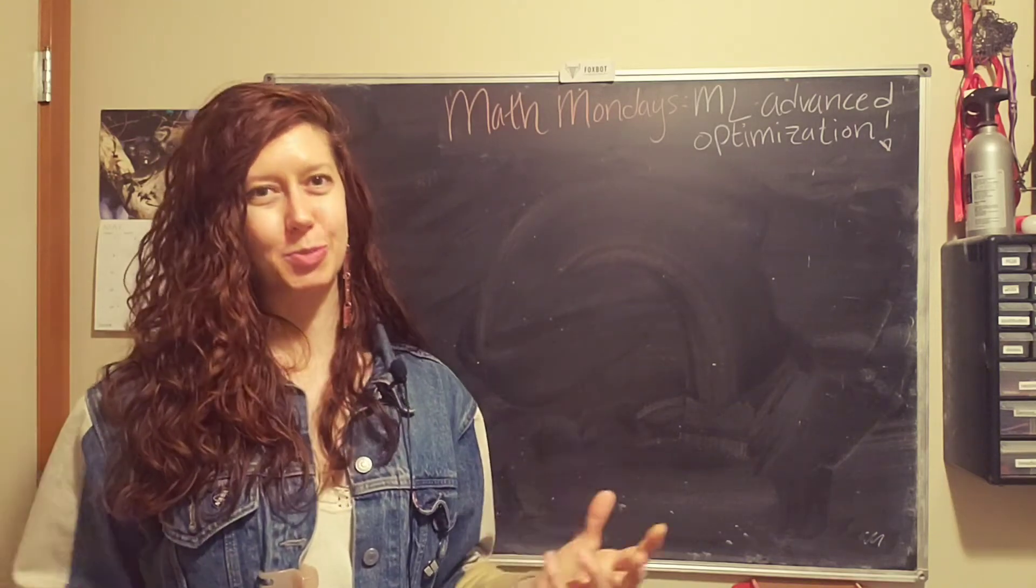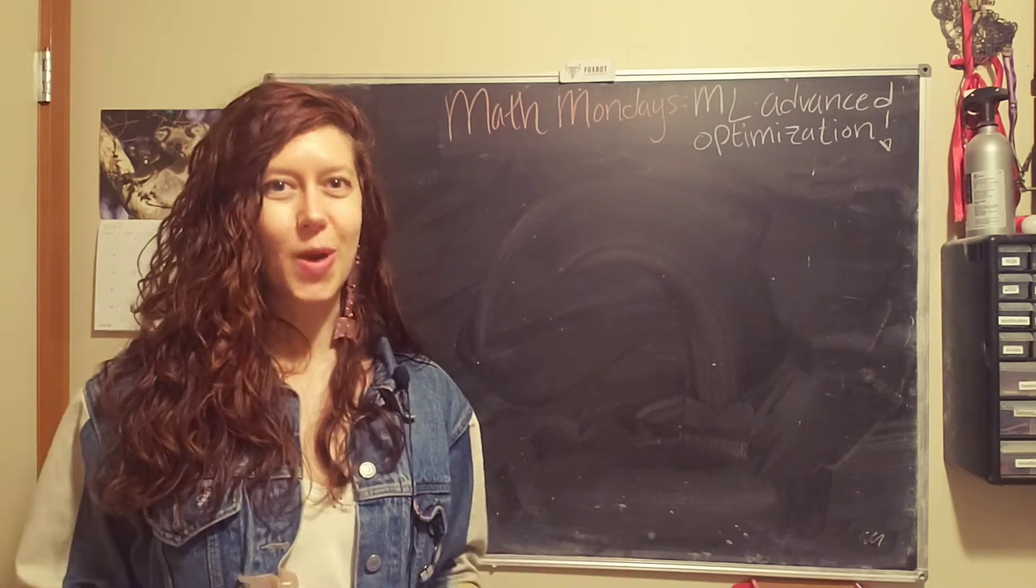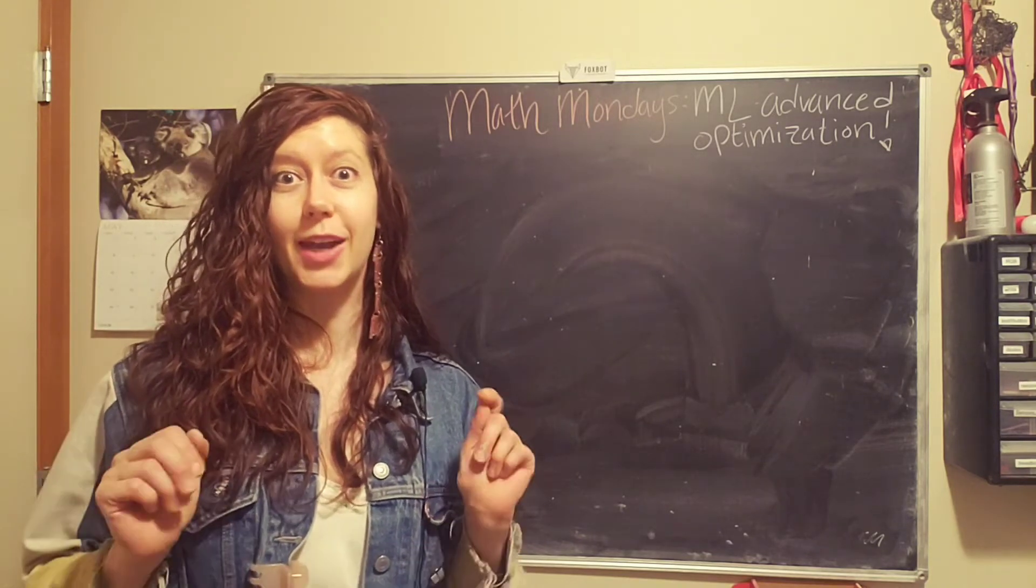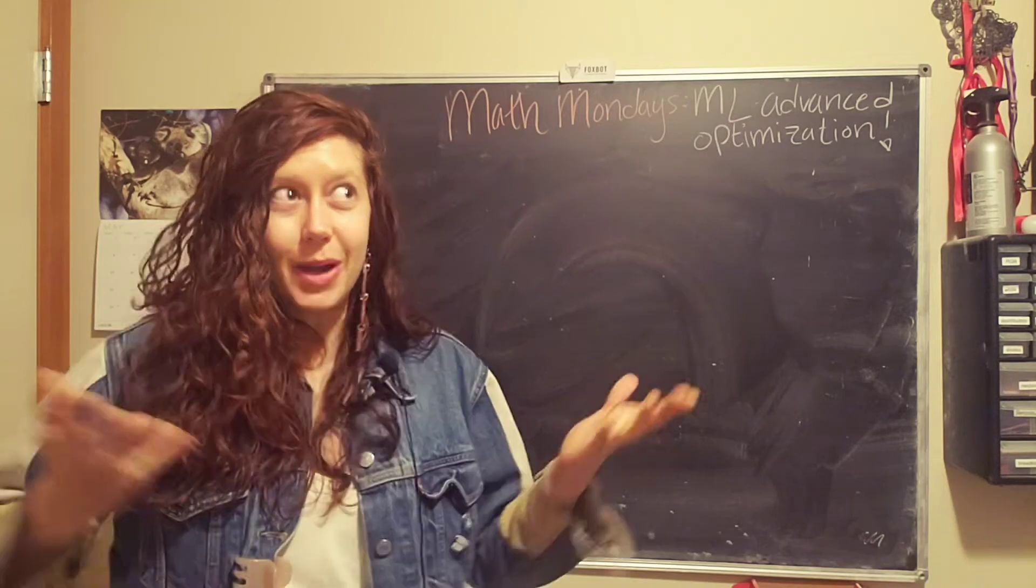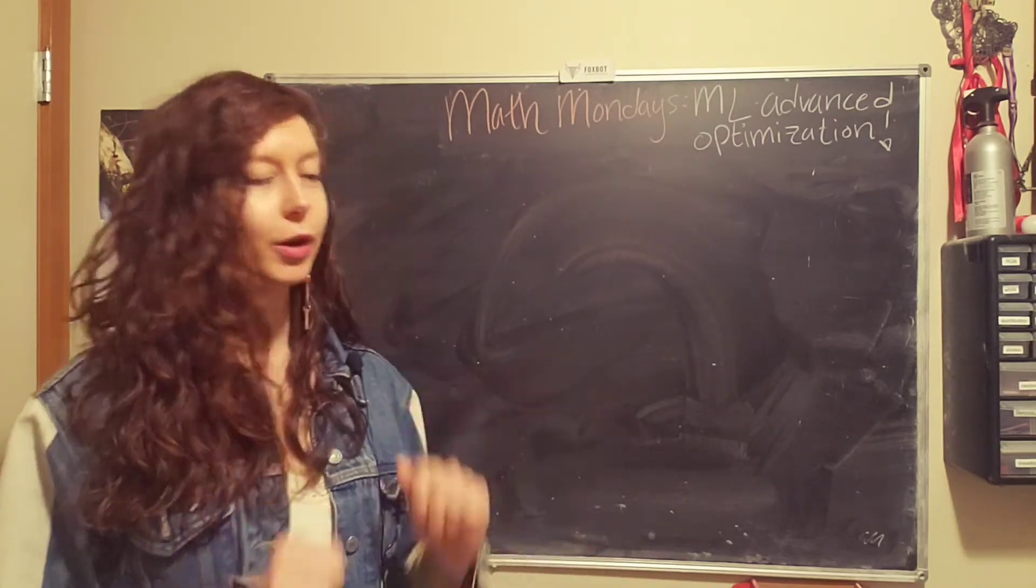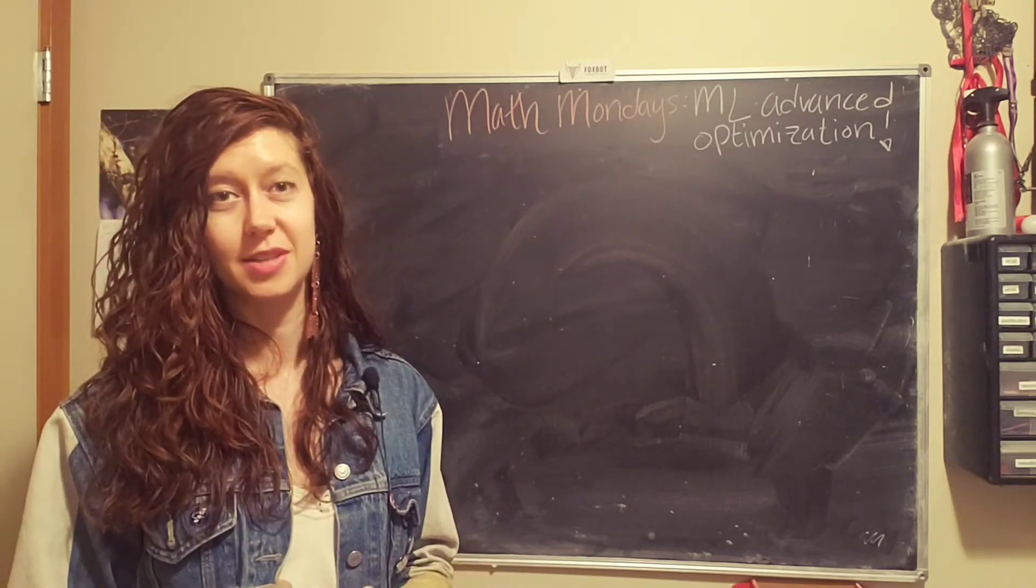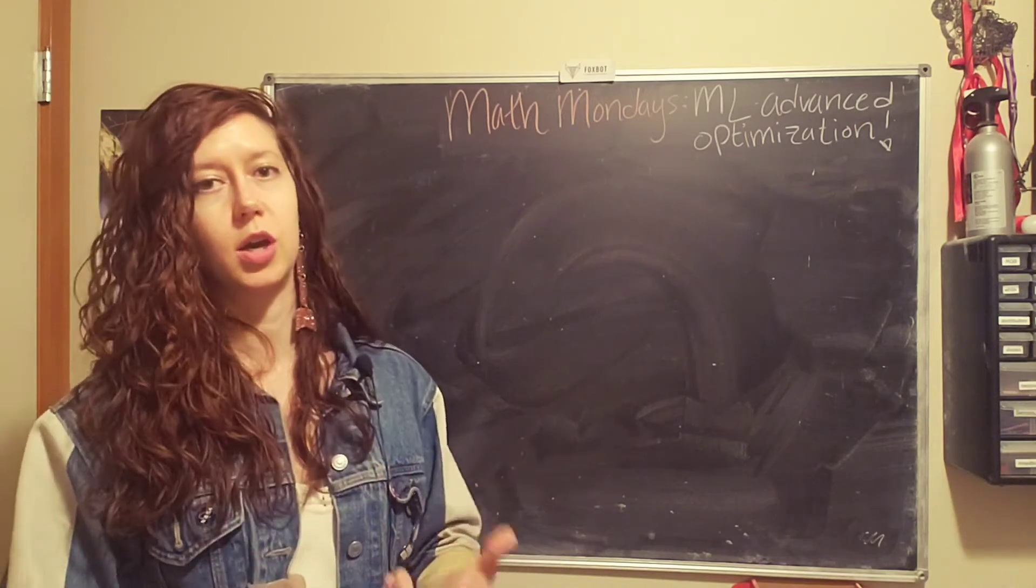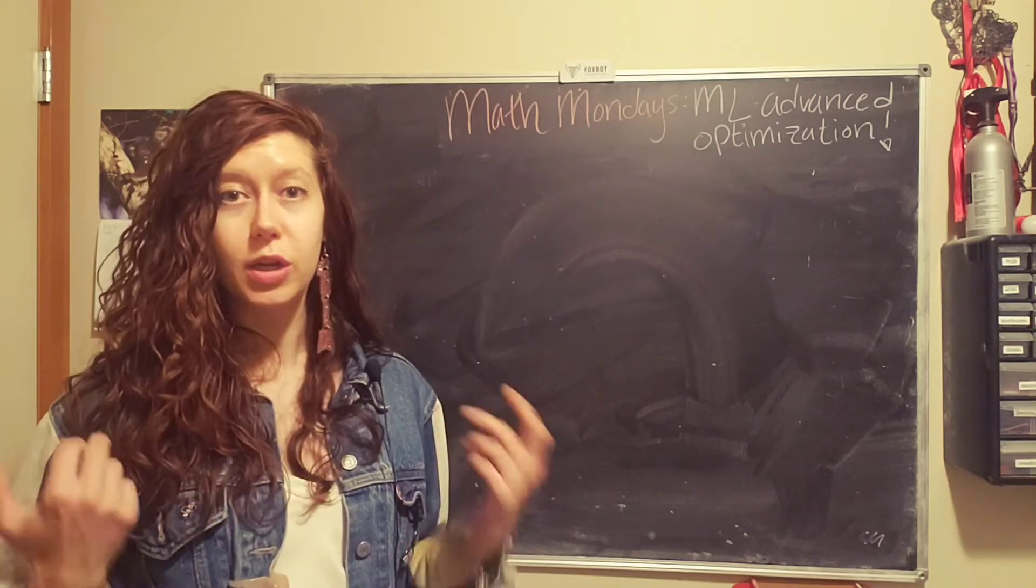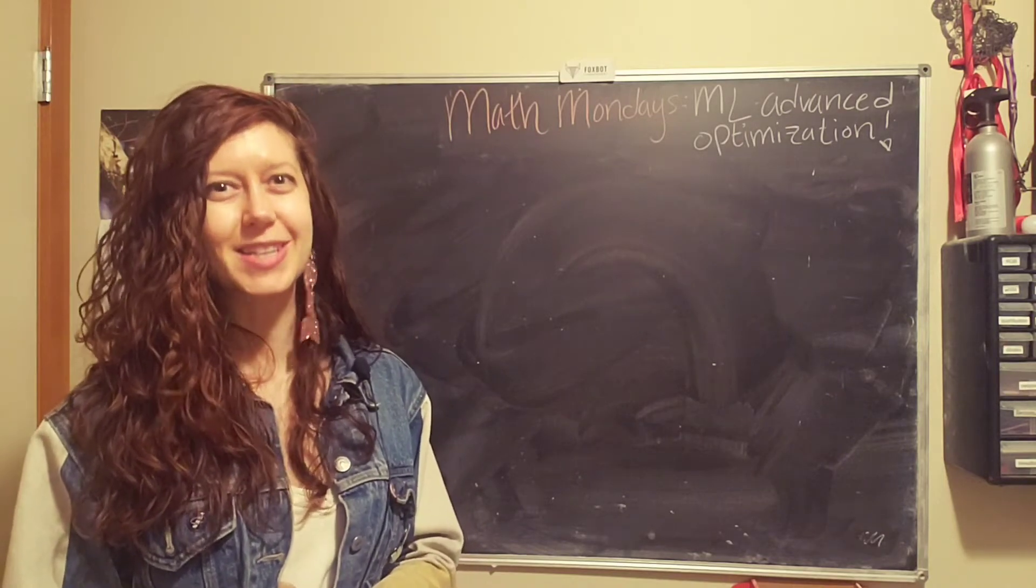So thus far in our exploration of machine learning, we have looked at gradient descent as a way to get our machine learning algorithm to be as accurate as possible. But there are other ways that we can do that. In this episode we're going to review what gradient descent is and what it does and why, and we'll talk about three different types of advanced optimization algorithms. Alright, so let's get started.